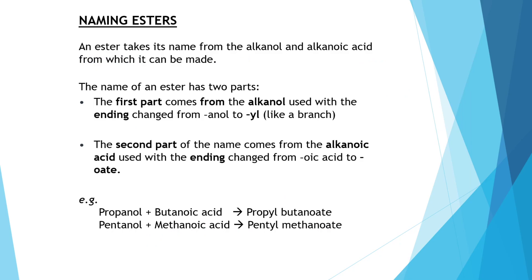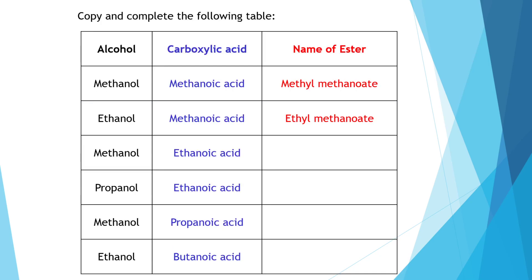To name esters, we take the first part from the alcohol and change its ending to '-yl', just like in a branch. We take the second part from the type of acid used. For instance, propanol becomes propyl, and butanoic acid becomes butanoate, so the ester is propyl butanoate. Similarly, pentanol reacting with methanoic acid becomes pentyl methanoate. Remember: if we had ethanoic acid and methanol, the ester would be methyl ethanoate — first part from the alcohol, second part from the acid, always. Now it's your turn to copy and complete the table.